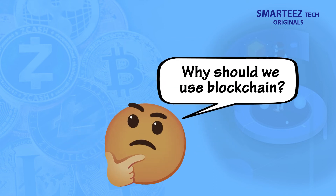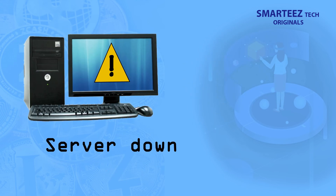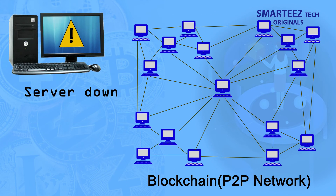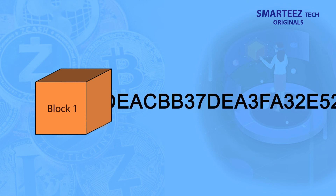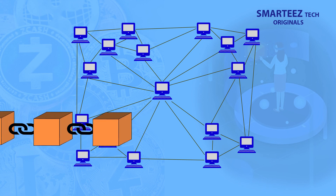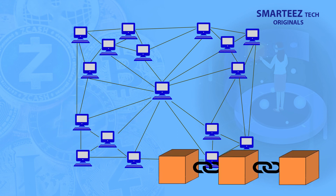Now that you understand how blockchain works, what are its advantages? First, the failure of a single machine or server does not lead to loss of transaction details — decentralization on a peer-to-peer network ensures no dependence on centralized corporate networks. Second, it's very secure because the data is encrypted by a complex algorithm. Third, data integrity is preserved because the data can't be changed easily. Finally, there is transparency and ease of audit of transactions.